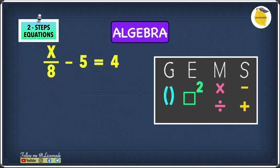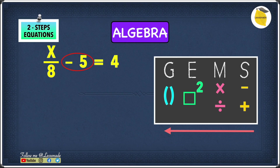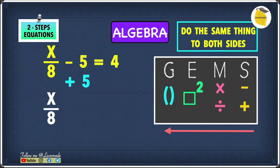Now let's look at another two-step equation: x over 8 minus 5 equals 4. When undoing things in algebra we work backwards, from subtraction and addition to groups, so we get rid of the minus 5 first. To undo minus 5 we add 5, because x over 8 minus 5 plus 5 leaves just x over 8. We do the same to both sides: 4 plus 5 equals 9, giving us x over 8 equals 9.